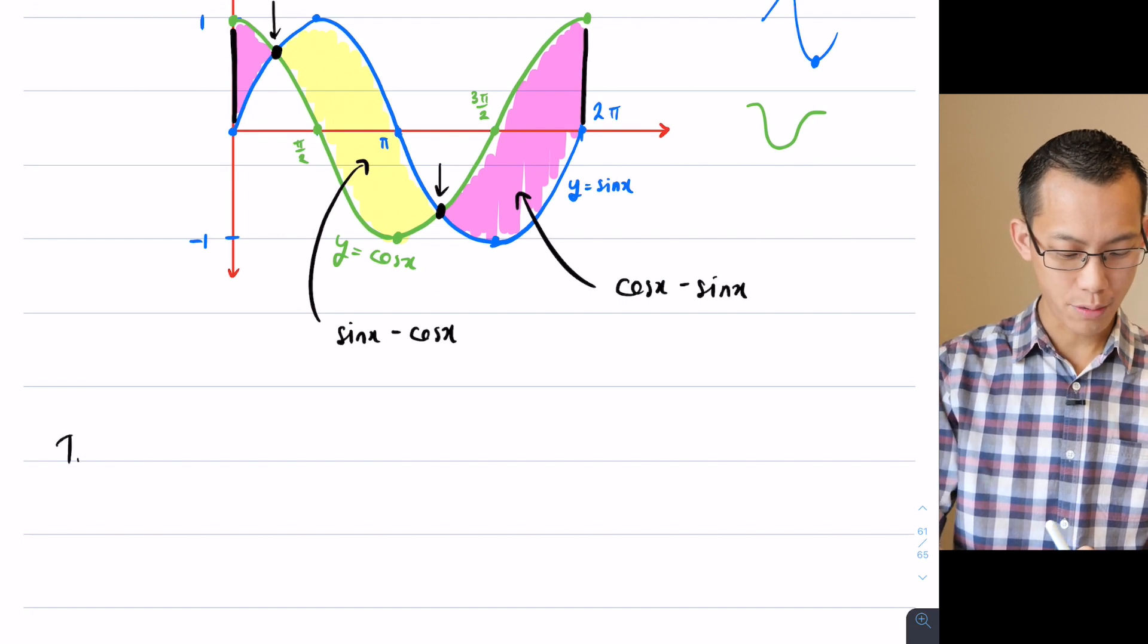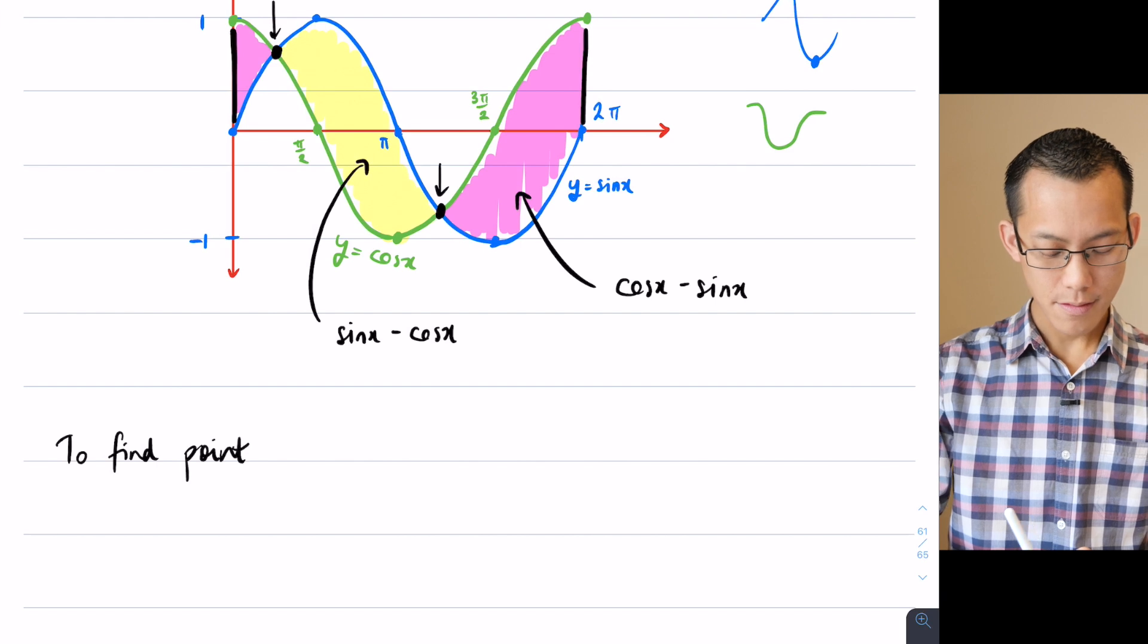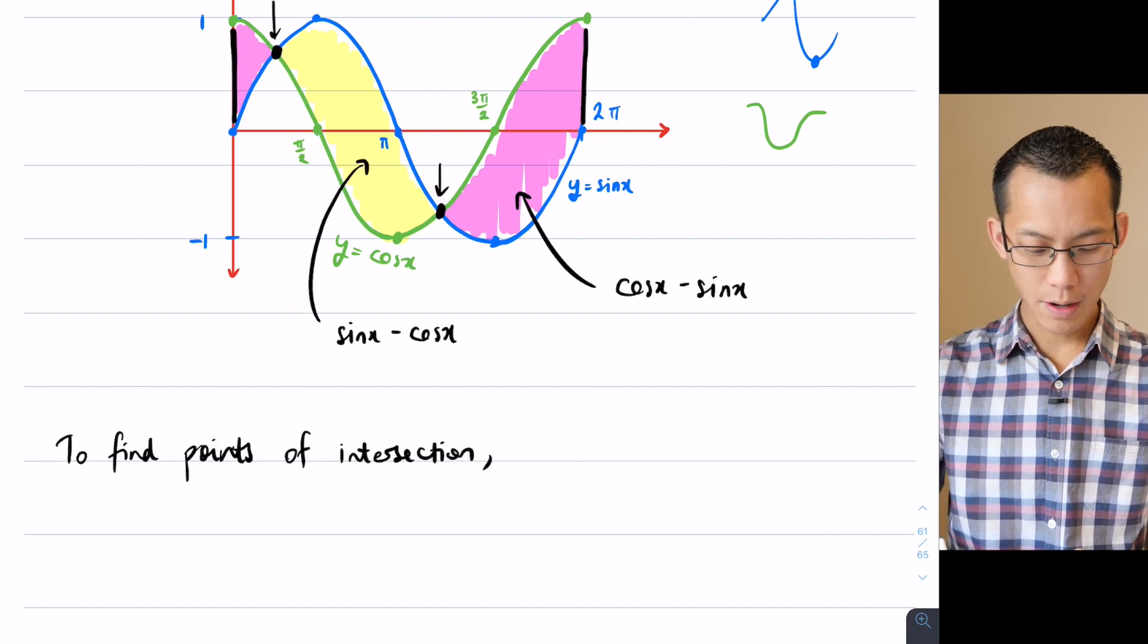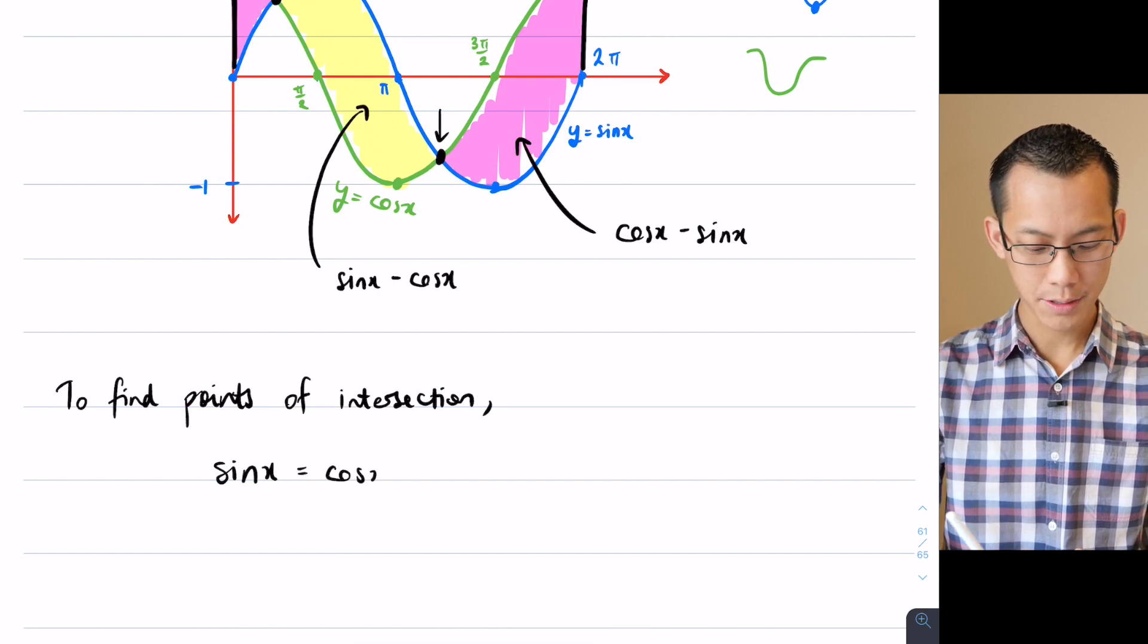To solve simultaneously to find points of intersection, my two functions are sine x and cos x. So to find points of intersection, I'm going to solve sin x equals cos x.